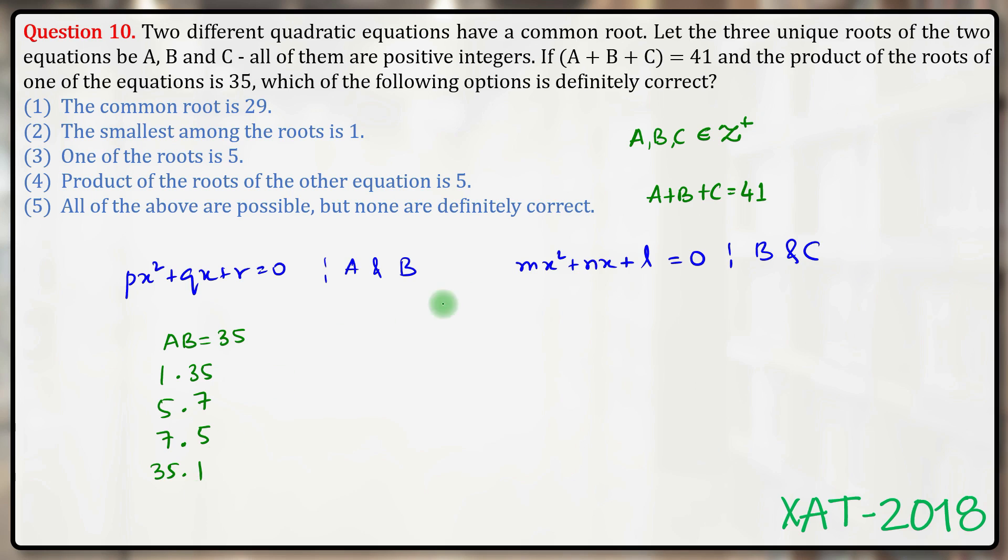Now we know a + b + c = 41. So substituting, if a is 1, b is 35, then c must be 5. If a is 5, b is 7, then c must be 29.